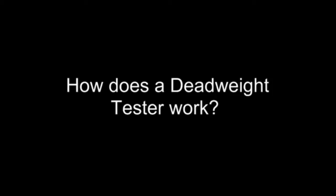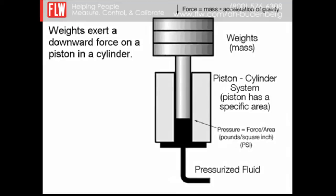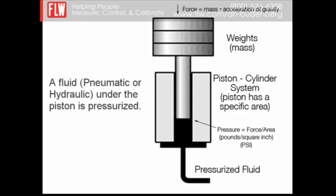How does a dead weight tester work? A dead weight tester generates a force over a specific area. Weights are placed on a piston and exert a force on a fluid in a cylinder. The fluid is pressurized under the piston.